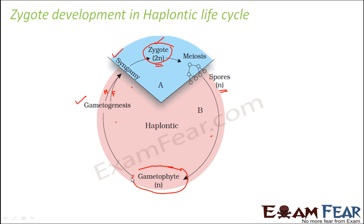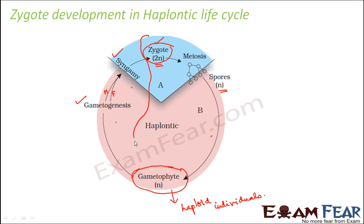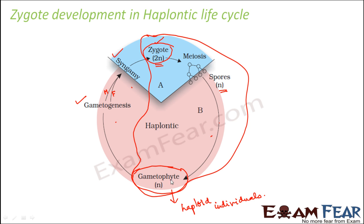These haploid individuals are the offspring. They later become mature and are able to undergo gametogenesis — that is, they are able to produce gametes. This is how the zygote develops in a haplonic life cycle. The zygote development phase leads up to the gametophyte, so the haploid individuals in this case are called gametophytes.